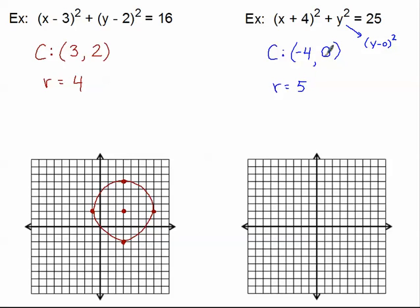Plotting the second circle: the center is at (−4, 0), which is 4 units to the left. Then go 5 units up, down, left, and right from the center to get four points on the circle. Connect those four points into a nice curved circle. Try not to go straight to the point or it will look more like a rhombus. You'll get better at this as you practice.